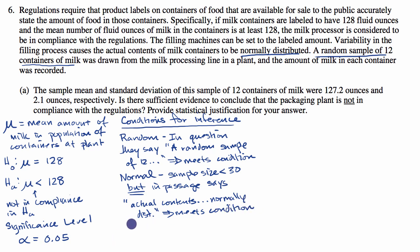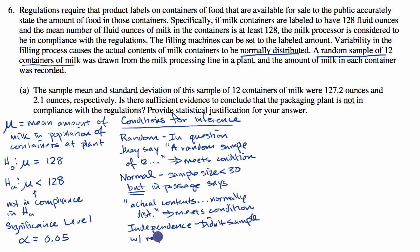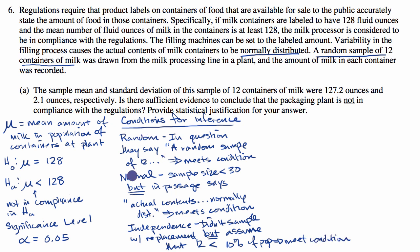The last condition is independence — to feel good that the individual observations in our sample can be considered roughly independent. One way is if sampling with replacement, which they're not doing here. But another way is if 12 is less than 10% of the overall population, then we can view them as roughly independent. We didn't sample with replacement, but we can assume that 12 is less than 10% of the overall population. That meets the condition as well.